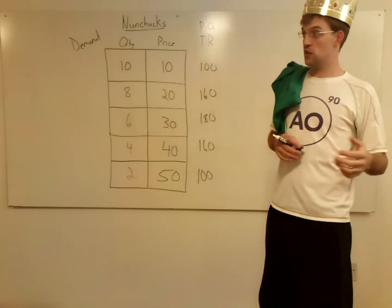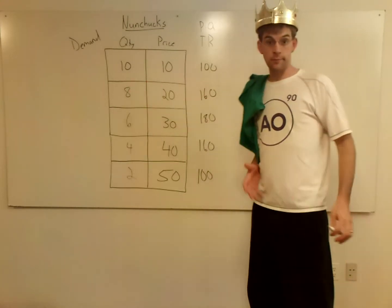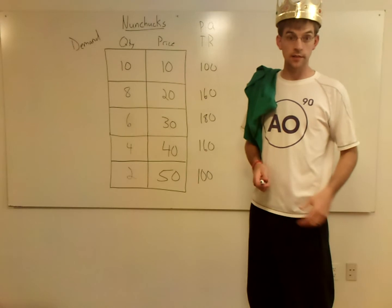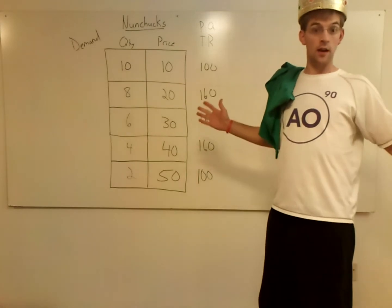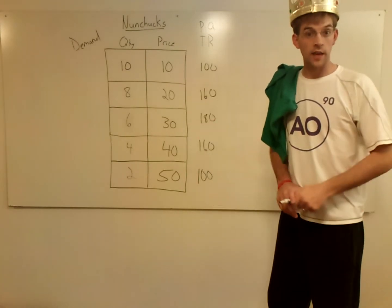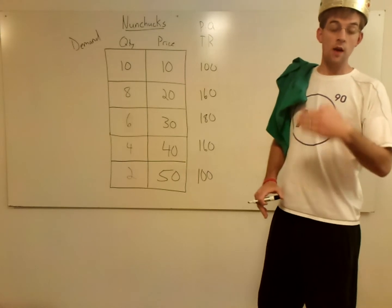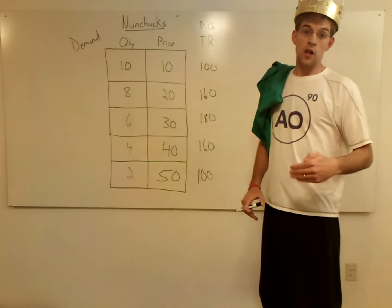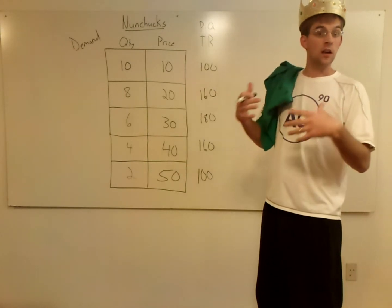Compare that to apples — an elastic good. If the price of apples goes way up, I'll say, 'Well, I'll go get some oranges, I'll get some mangoes.' So with an elastic good, the price goes up, people stop buying it, and the revenue goes down.